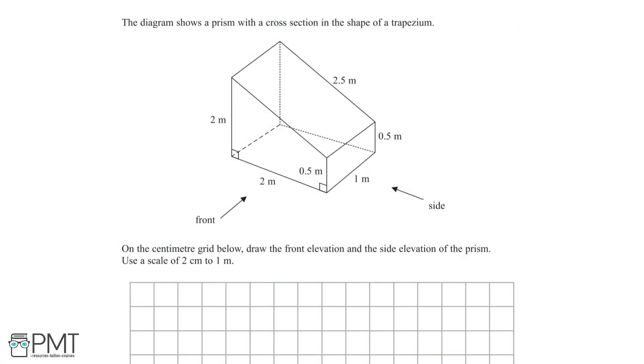In this question, we are given a diagram which shows a prism with a cross section in the shape of a trapezium. We are told to use the centimetre grid below to draw the front elevation and the side elevation of the prism, and we need to use a scale of 2cm to 1m.